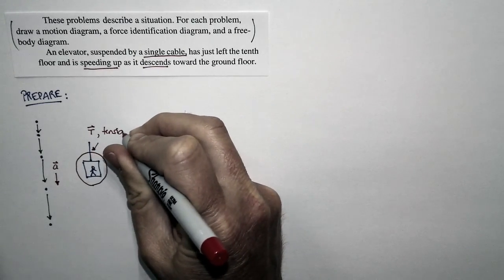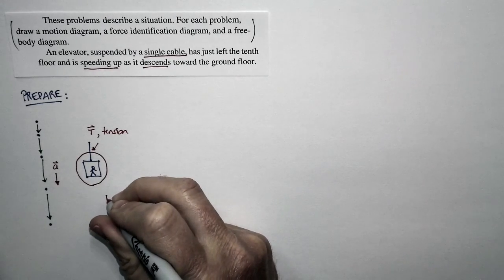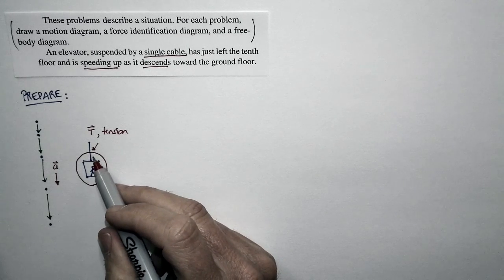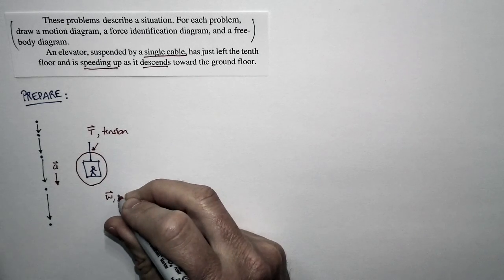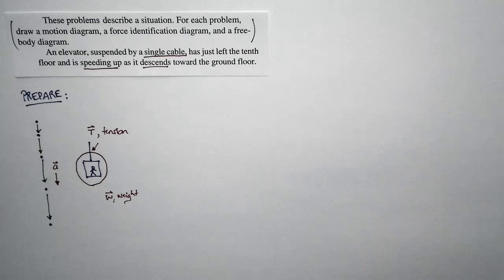Okay, so the cable exerts a tension force. The other force, which is clearly at work, is the long-range force of gravity. So there's one contact force because there's only one thing that touches the elevator. And then there's a weight force, the long-range force of gravity. Those are the only two forces that are at work.